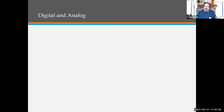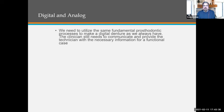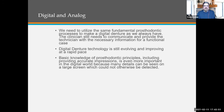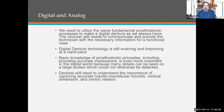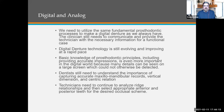Regarding digital and analog: we need to utilize the same fundamental prosthodontic processes to make a digital denture as we always have. The clinician still needs to communicate and provide the technician with the necessary information for a functional case. The basic knowledge of prosthodontic principles — including providing accurate impressions — is even more important in the digital world because many details can be seen on a large screen that couldn't otherwise be detected. Dentists still need to understand the importance of capturing accurate maxillomandibular records, vertical dimension, and centric relation. Technicians need to analyze ridge relationships and select appropriate anterior and posterior teeth of the desired occlusal scheme.